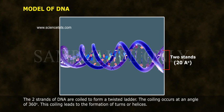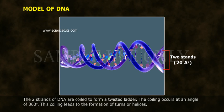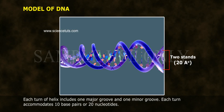The two strands of DNA are coiled to form a twisted ladder. The coiling occurs at an angle of 360 degrees. This coiling leads to the formation of turns or helices. Each turn of the helix includes one major groove and one minor groove.